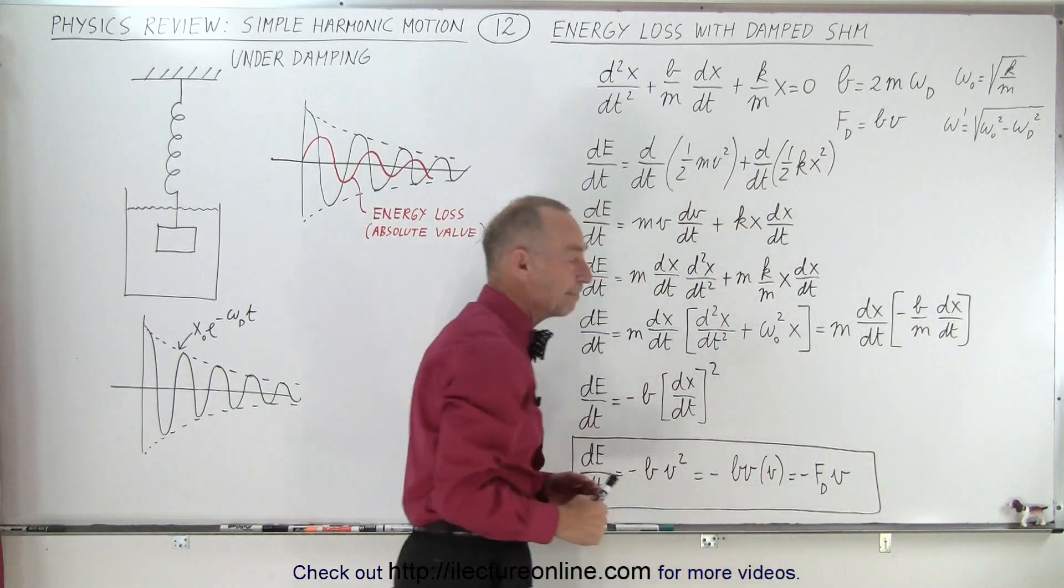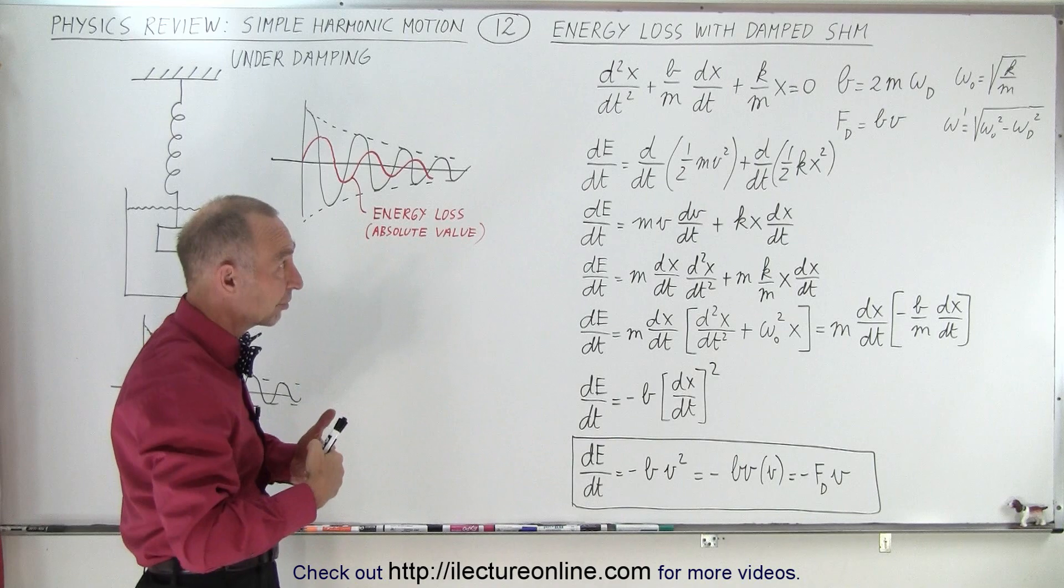Also notice that the damping force is always going to be equal to b, the constant, times the velocity. So what we expect is that the most energy will be lost when the velocity is greatest. What we're going to do is calculate the change in energy over time from this equation.